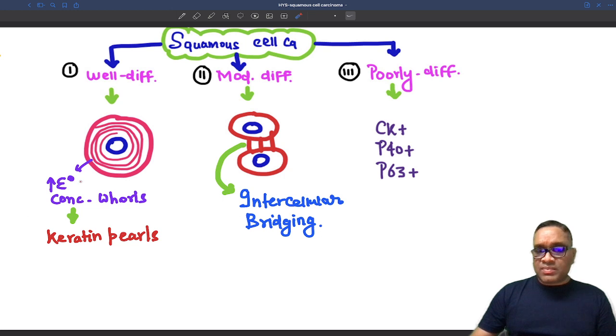Well differentiated Squamous Cell Cancer will be having keratin pearls, which is an eosinophilic concentric whorl seen inside the tumor cell.